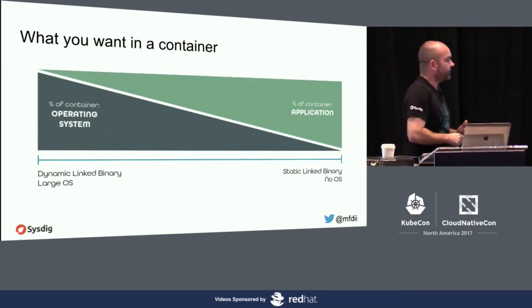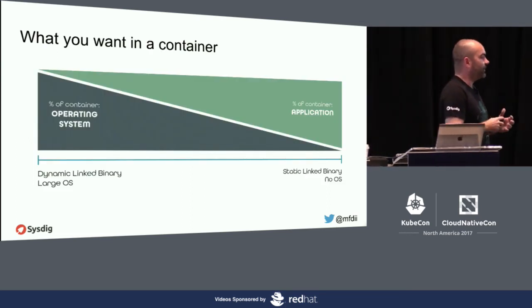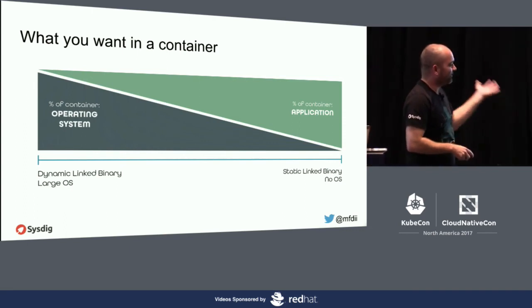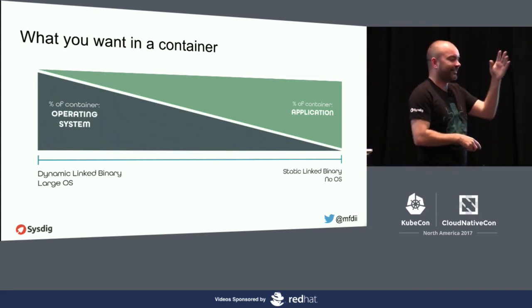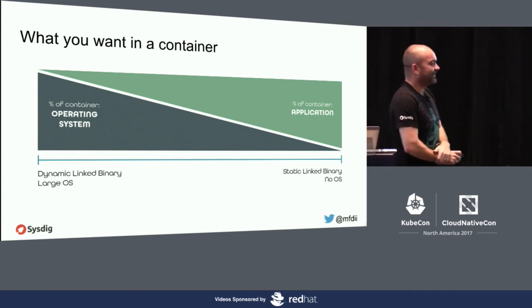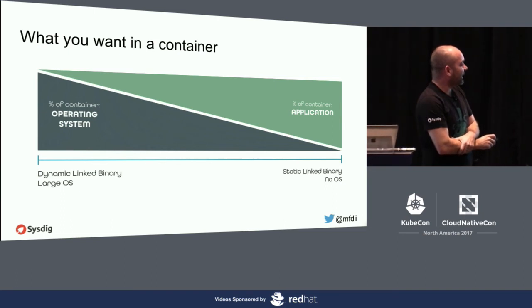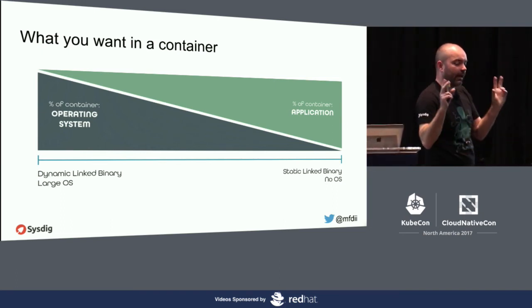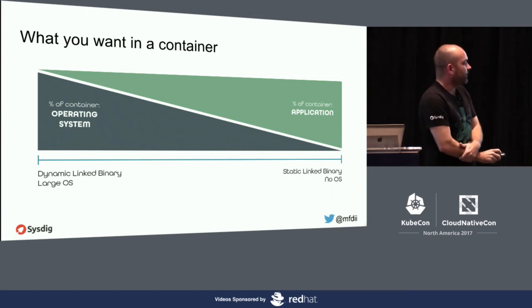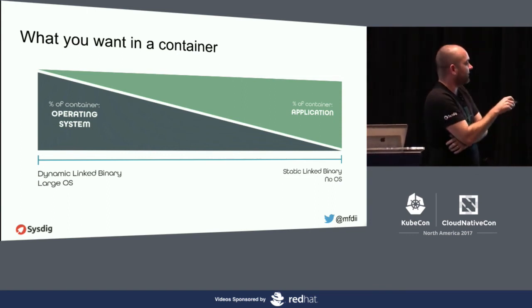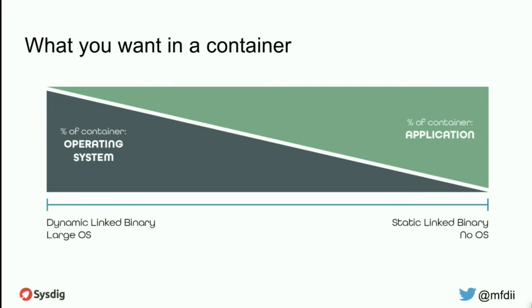What do you want in a container? I've been using this diagram for a long time. What you want to eliminate as much as possible is the percent that's considered the operating system. Think of the weight of the container — overall size — and you want ideally 100% of your container to be the application and the libraries you need, eliminating the OS layer as much as possible.